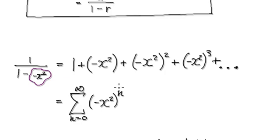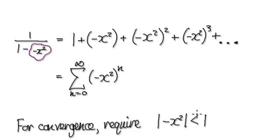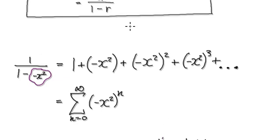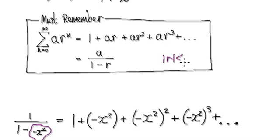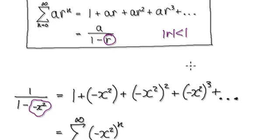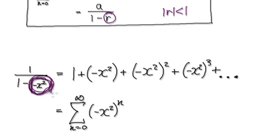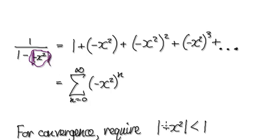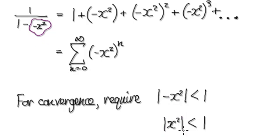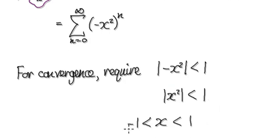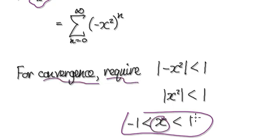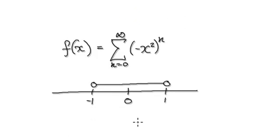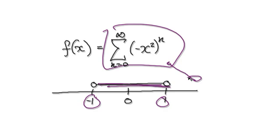We now need to find the interval of convergence. For convergence, we require the absolute value of the common ratio to be less than 1. Our common ratio is this thing here, so we require the absolute value of this to be less than 1. The absolute value of a negative just gets rid of the negative, so that gives you x squared less than 1, which translates to x strictly less than 1 and greater than negative 1. Anything strictly between negative 1 and 1, the series will definitely converge. We now need to check the endpoints.